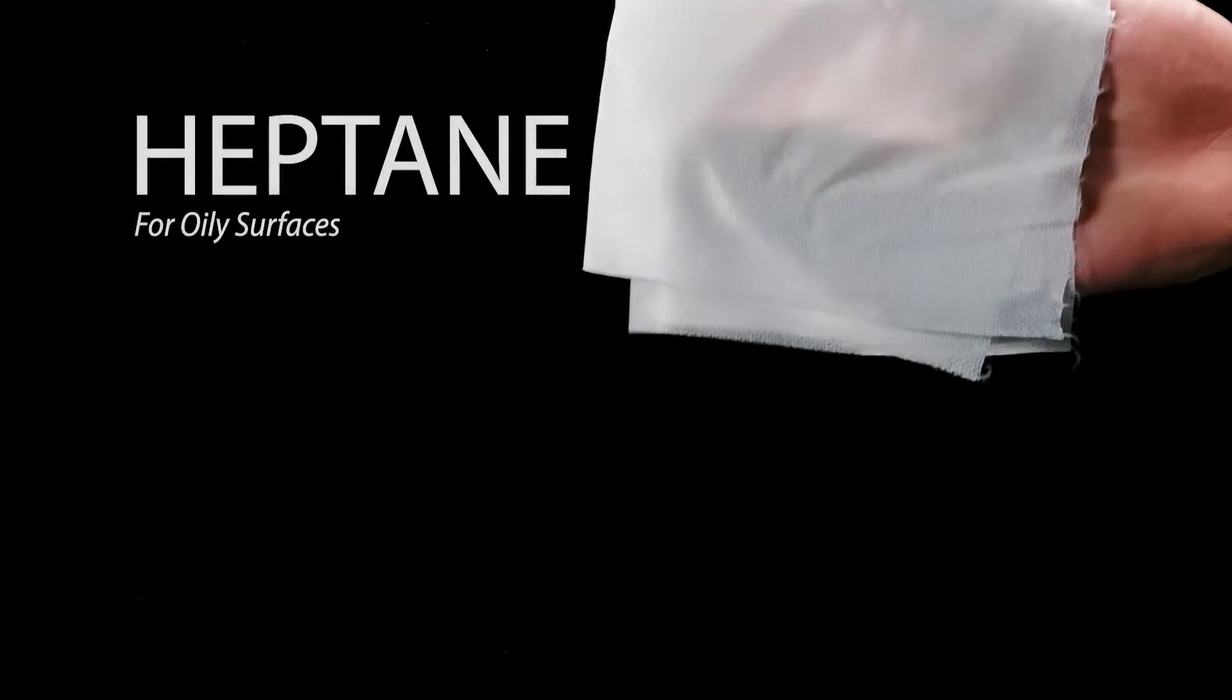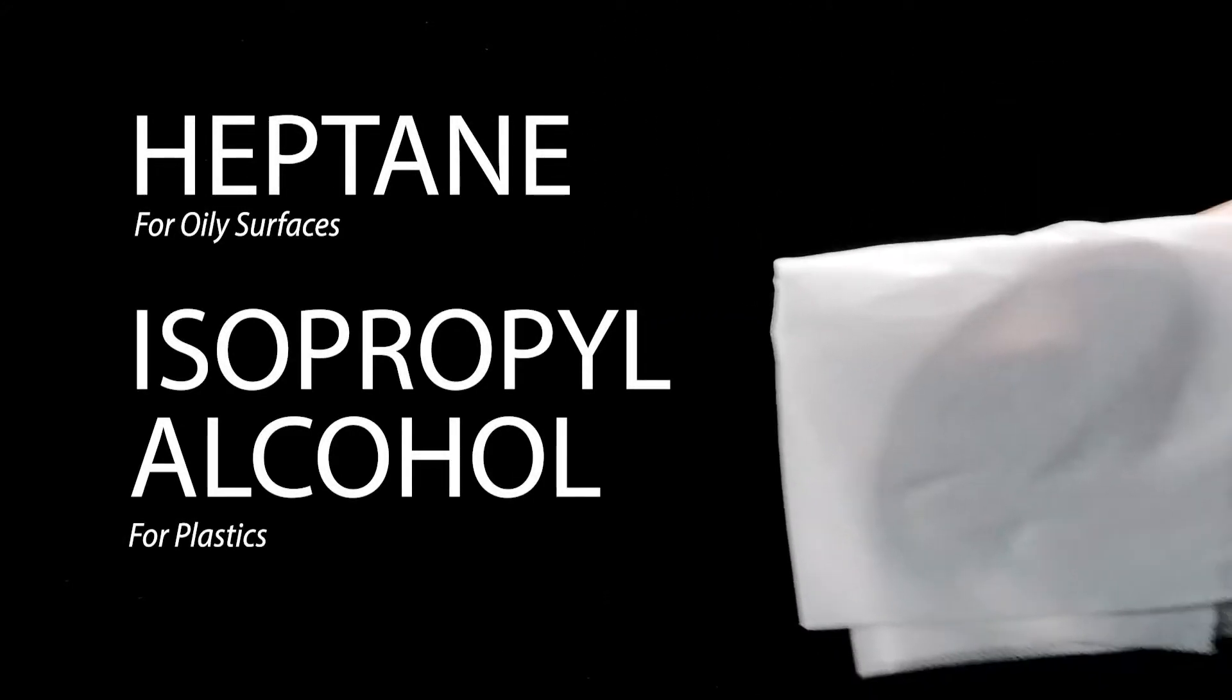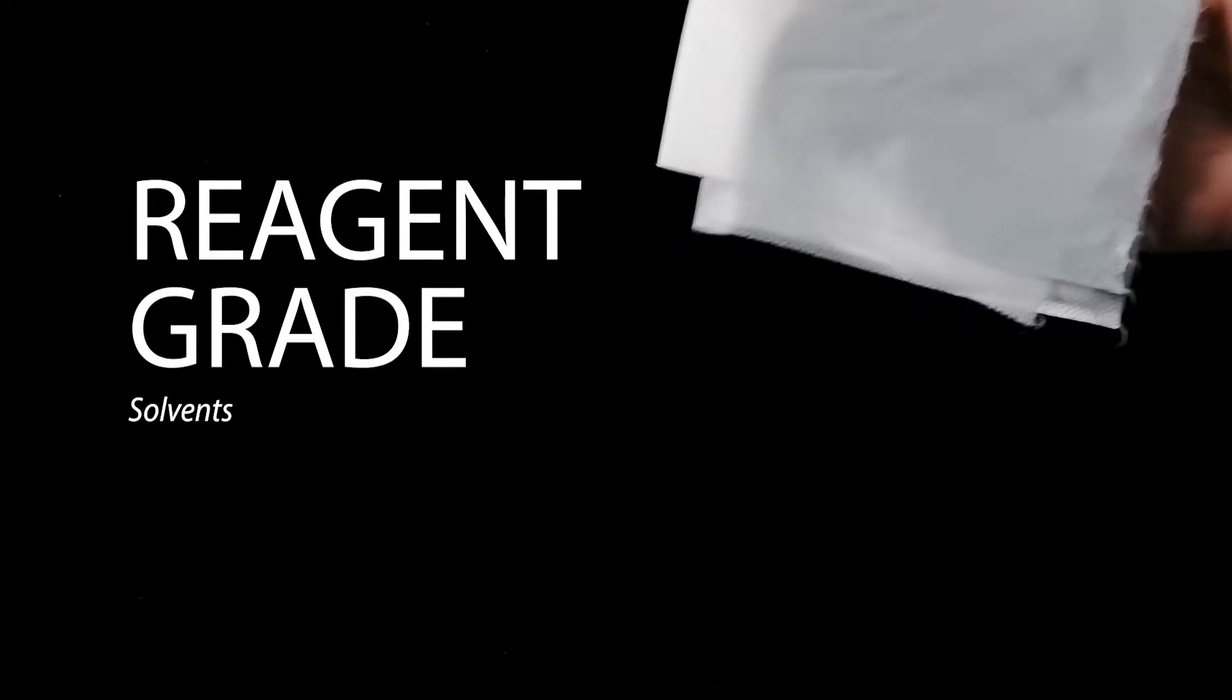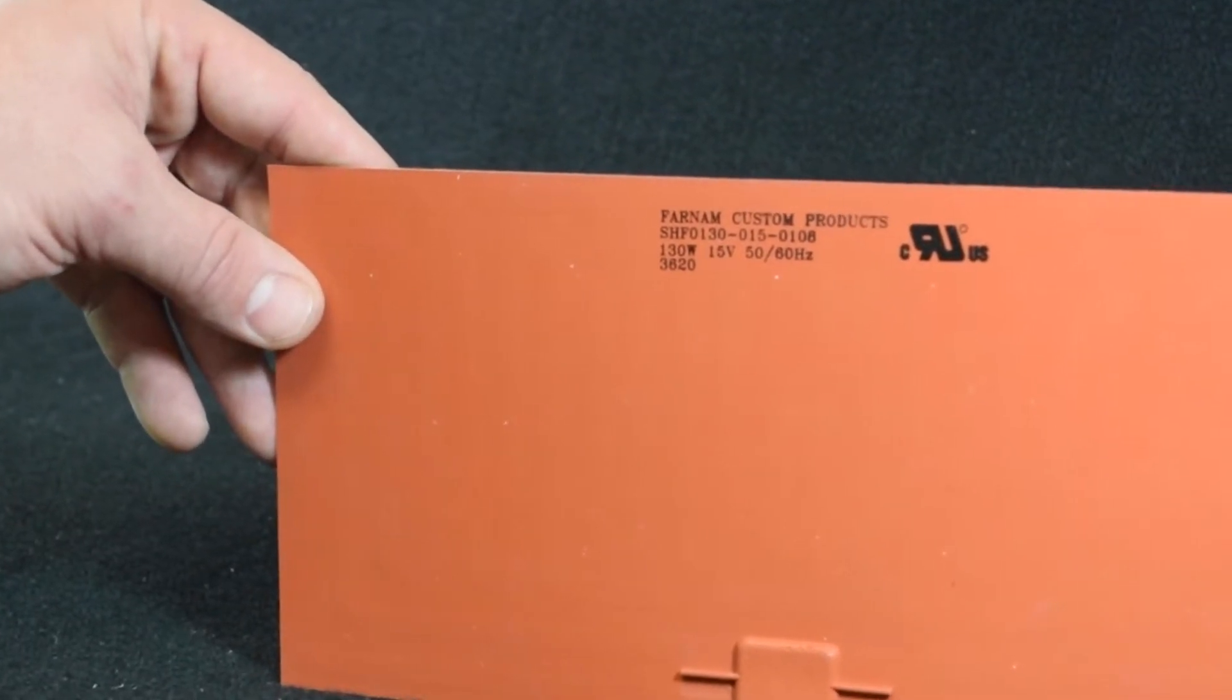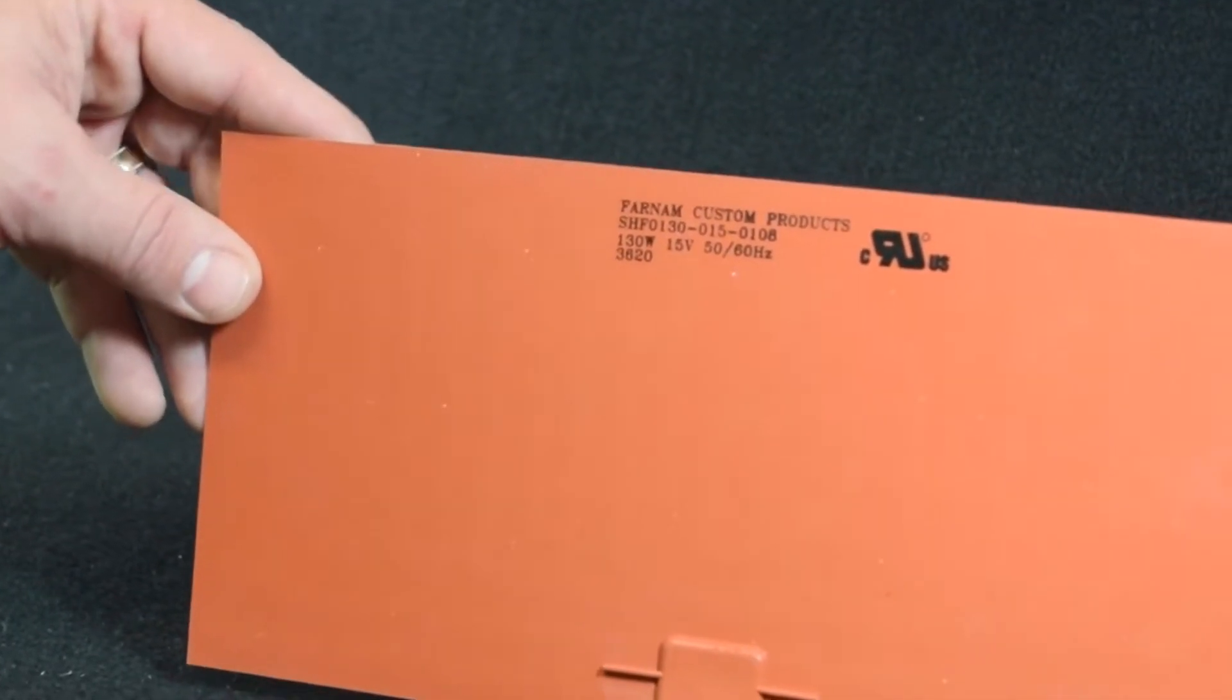Typical cleaning solvents are heptane for oily surfaces or isopropyl alcohol for plastics. Use reagent grade solvents since common household materials like rubbing alcohol frequently contain oils to minimize the drying effect on skin and can interfere with the performance of a pressure sensitive adhesive.